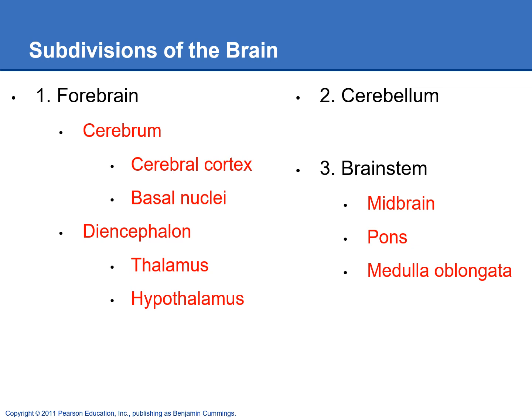We can further subdivide the three parts of the brain. The forebrain divides into the cerebrum and the diencephalon. The cerebrum is further divided into the cerebral cortex and the basal nuclei. The diencephalon divides into the thalamus and the hypothalamus. And the brainstem subdivides into the midbrain, pons, and medulla oblongata.